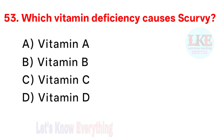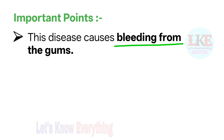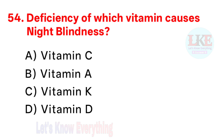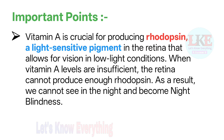Question number 53: which vitamin deficiency causes scurvy? Right answer option C: vitamin C. The disease causes bleeding from the gums. Last and final question, question number 54: deficiency of which vitamin causes night blindness? Very important question. Right answer: vitamin A. Vitamin A is crucial for producing rhodopsin, a light-sensitive pigment in the retina that allows for vision in low light conditions. When vitamin A levels are insufficient, the retina cannot produce enough rhodopsin, resulting in night blindness.